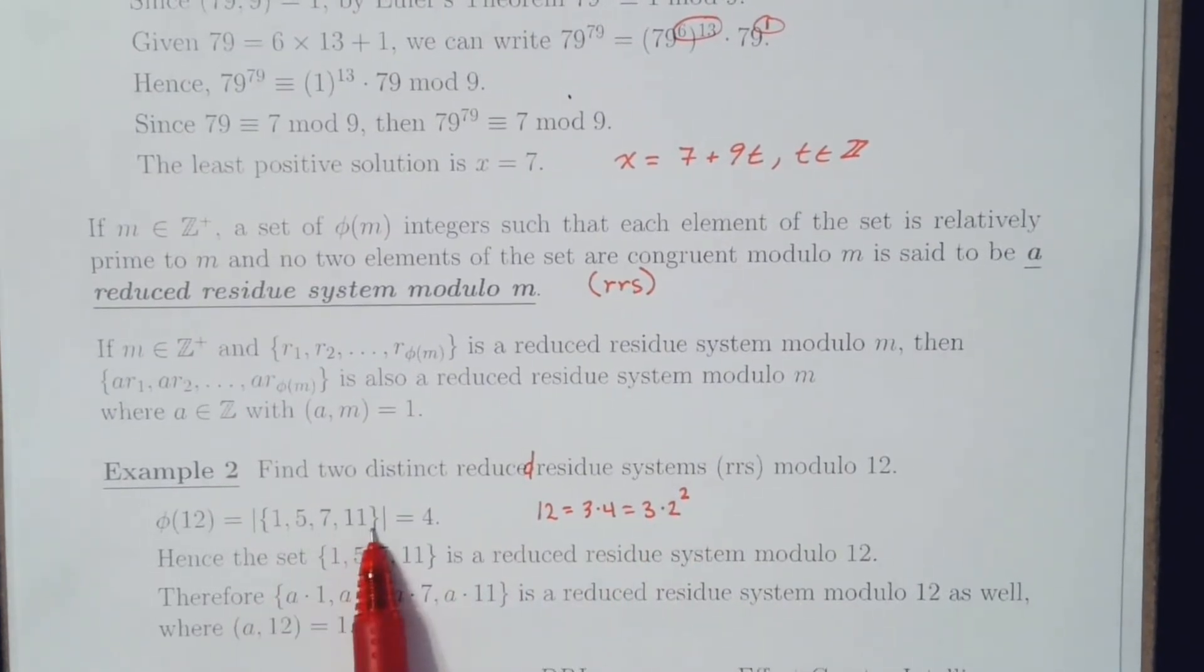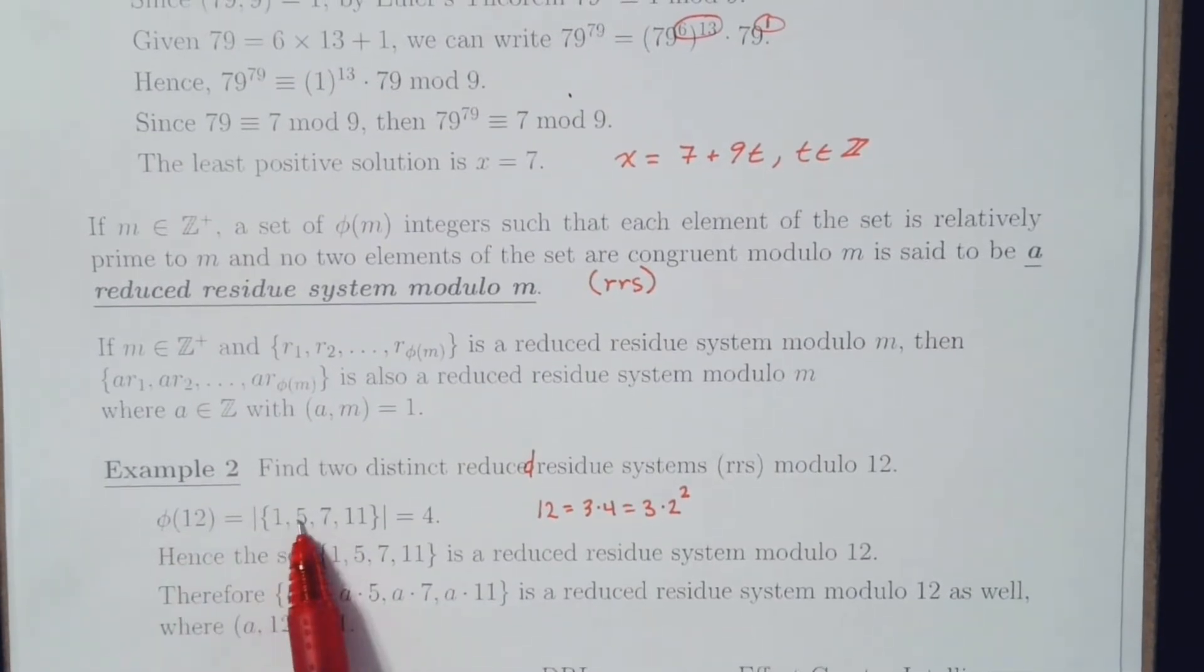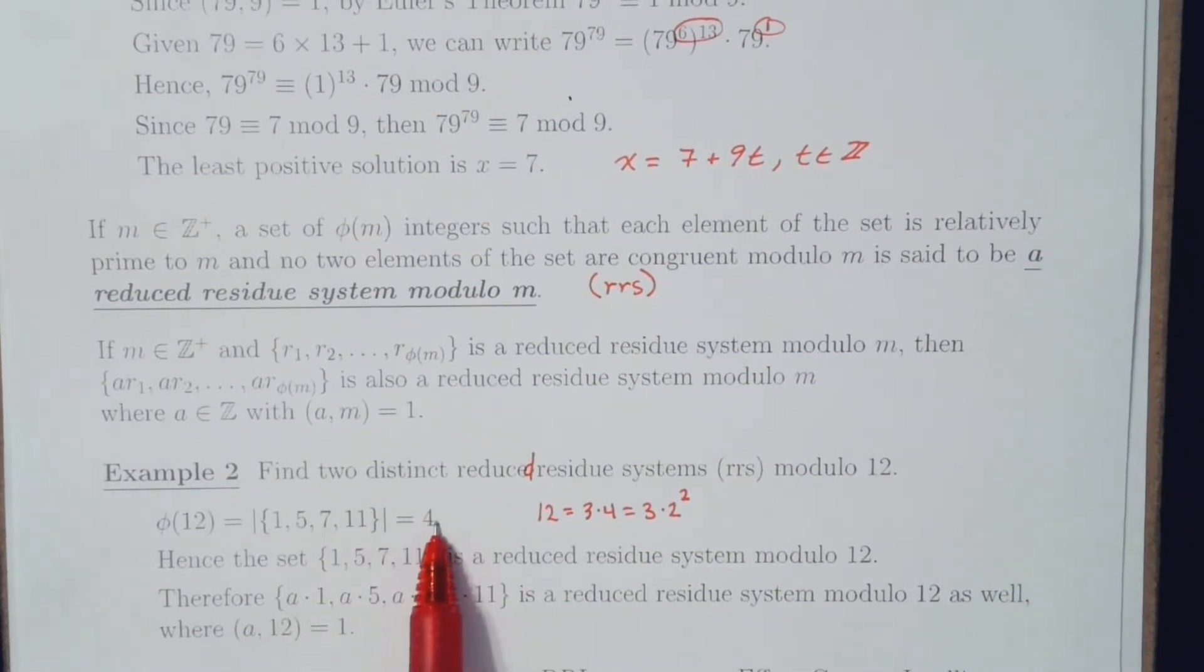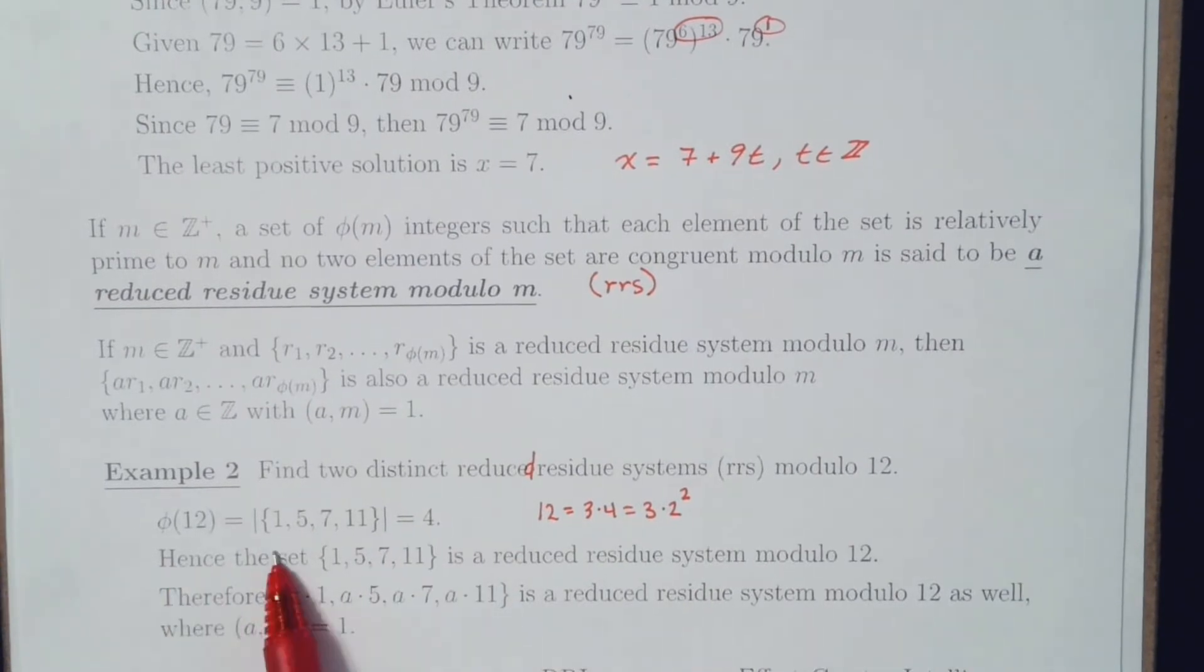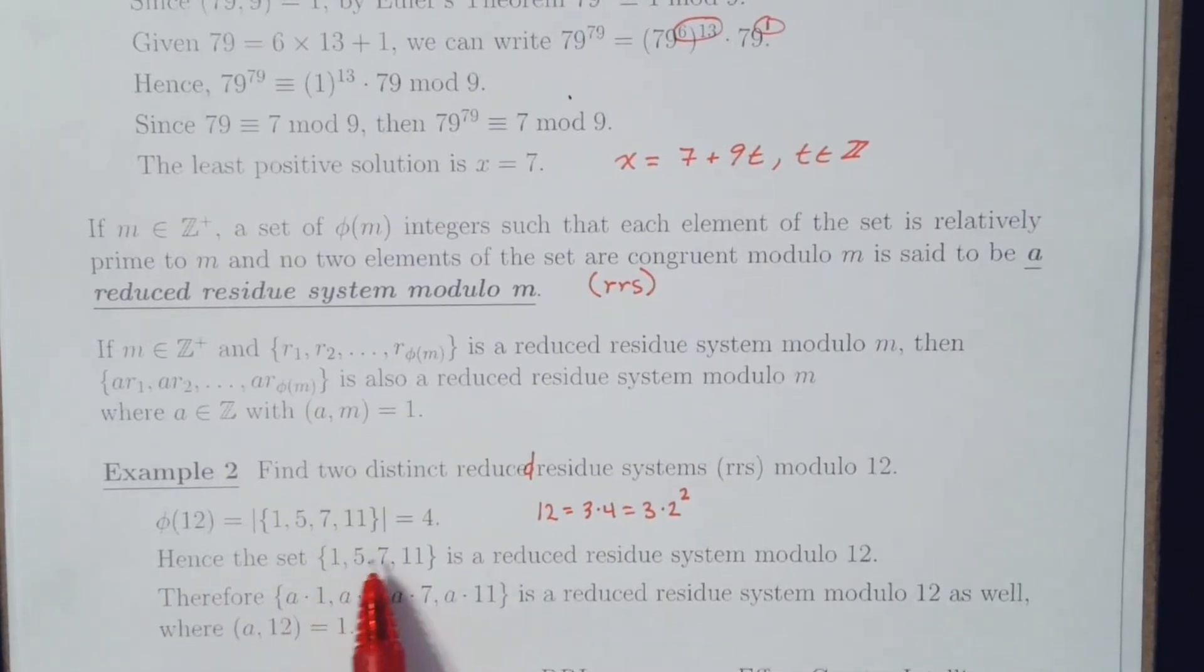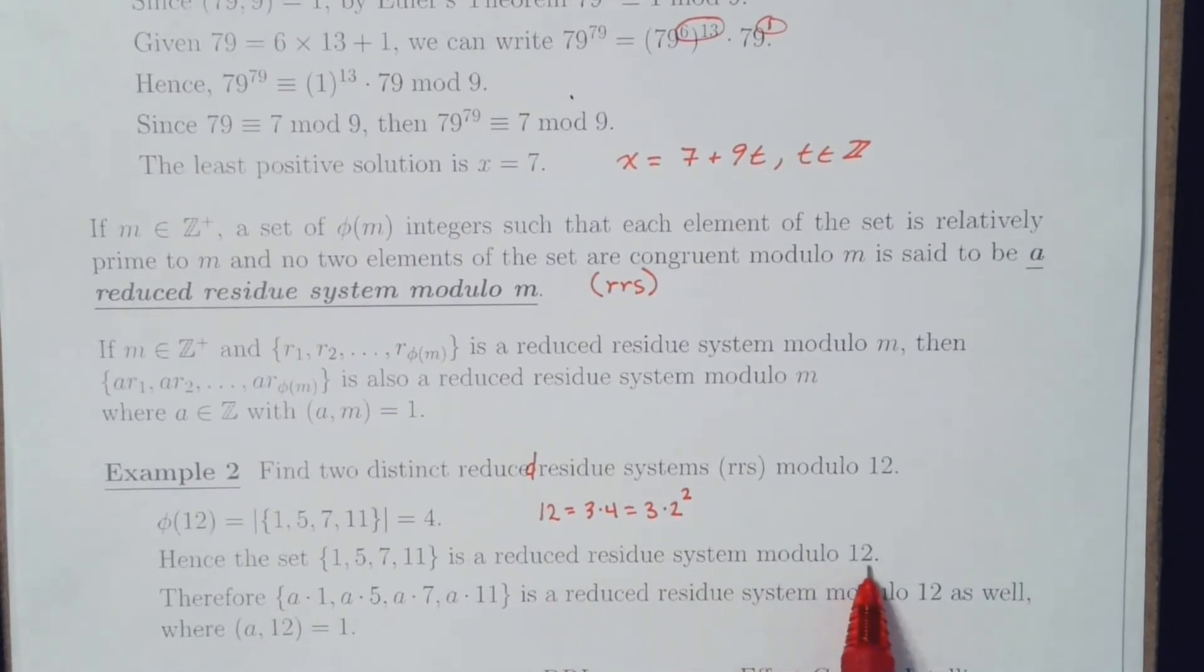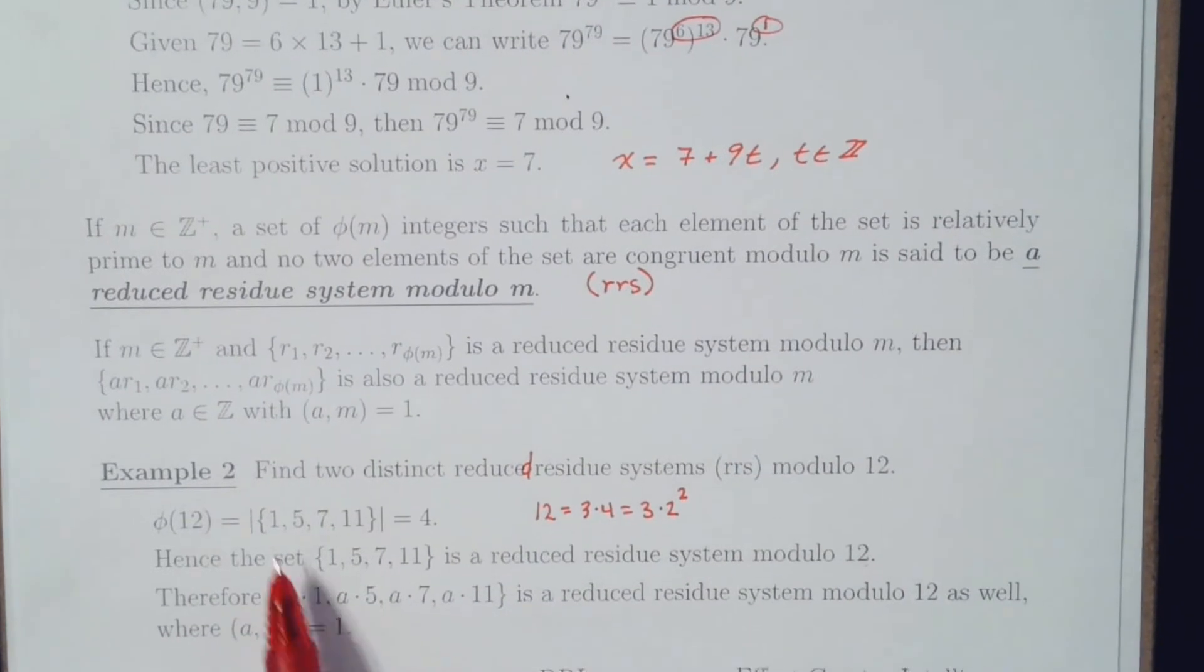So, the set of relatively prime positive integers to 12 are 1, 5, 7, and 11. And that is a magnitude of 4 because there's 4 elements in the set. Hence, this set is a reduced residue system modulo 12. That's how it's defined.